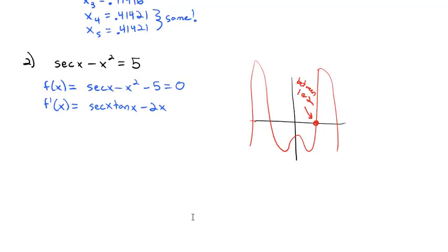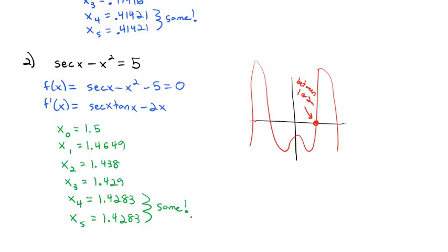I do want to make sure I'm showing my work, so I'm going to list out my guesses. My first guess we started at 1.5. My next guess shot us down to 1.4649. My x2 gave me 1.438. x3 gave me 1.429. x4 gave me 1.4283, and x5 gave me 1.4283 again which was the same. So my solution that's between 1 and 2 is actually at 1.4283.